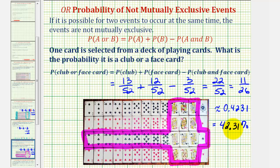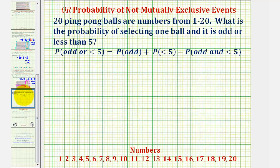Let's take a look at our second example. Twenty ping pong balls are numbered from 1 to 20. What is the probability of selecting one ball and it is odd or less than 5? Again, these two events are not mutually exclusive because a ball can be odd and less than 5 at the same time. Therefore, our probability will be equal to the probability of the ball being odd plus the probability the ball is less than 5 minus the probability that the ball is odd and less than 5.